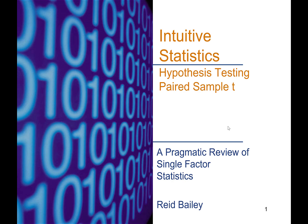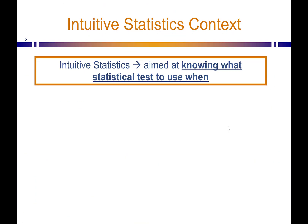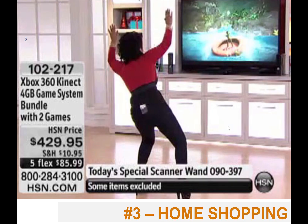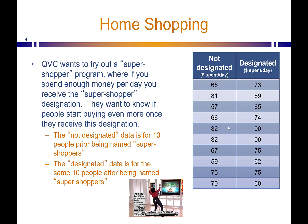Hi, my name is Reed Bailey. This is a video about hypothesis testing with a paired sample t-test, part of the Intuitive Statistics series where the real aim is helping you know when to use which test — assuming you've already had a traditional statistics course and been introduced to these in more depth. The example we're going to use is from a home shopping network where they want to see if their super shopper program is effective.